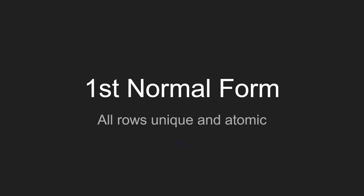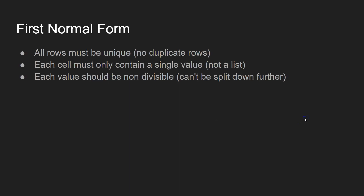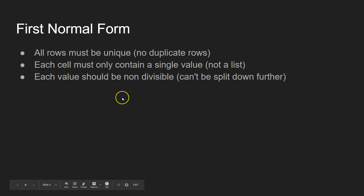1st normal form. This one is nice and simple. All rows must be unique and all cells must contain atomic values. Each row in the table must be unique, so there cannot be any duplicate rows in the table. You can't have two different rows where all of the data contained within those rows is identical. Each cell must only contain a single value — you can't have a cell that has a list of values. And each value should be non-divisible, meaning you can't break that down into further sensible parts.